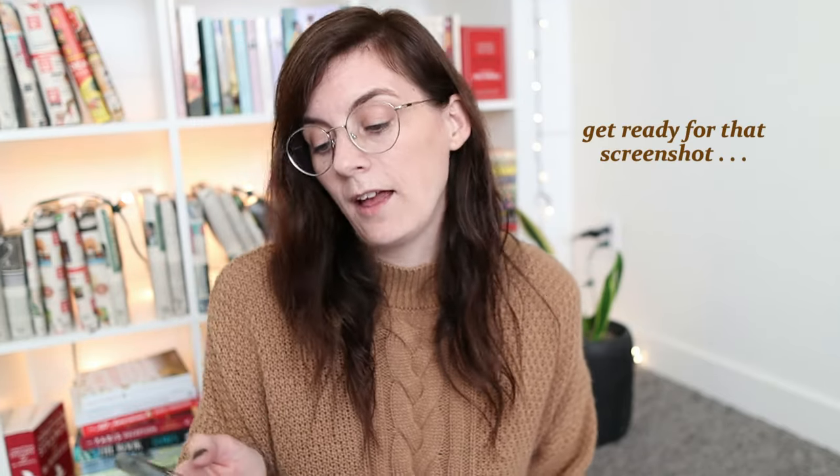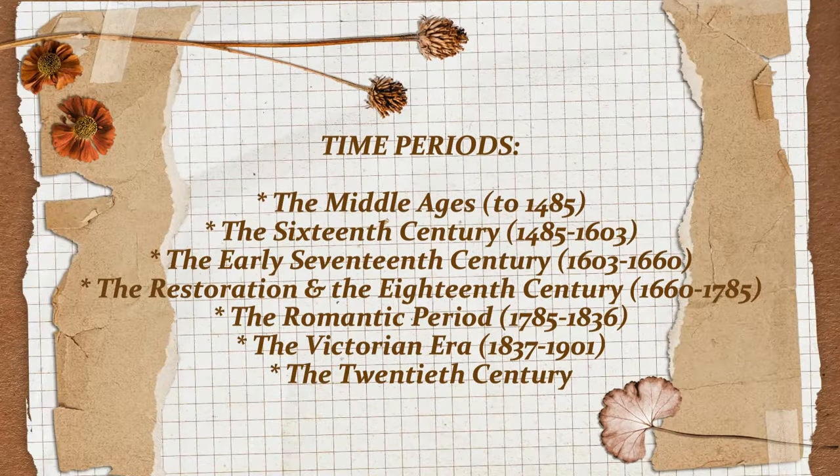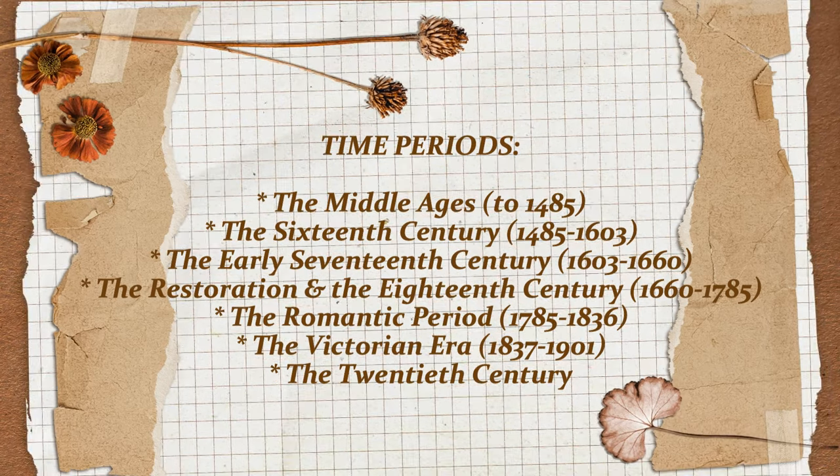The time periods, mostly drawn from my anthology, are: the Middle Ages (beginning of English literature to 1485), the 16th century (1485–1603), the early 17th century (1603–1660), the Restoration and 18th century (1660–1785), Romantic literature (1785–1836), Victorian literature (1837–1901), and then the 20th century. You're going to pick one, read four-plus books, read some critical texts, read six-plus poems, and read some critical texts on those poems.